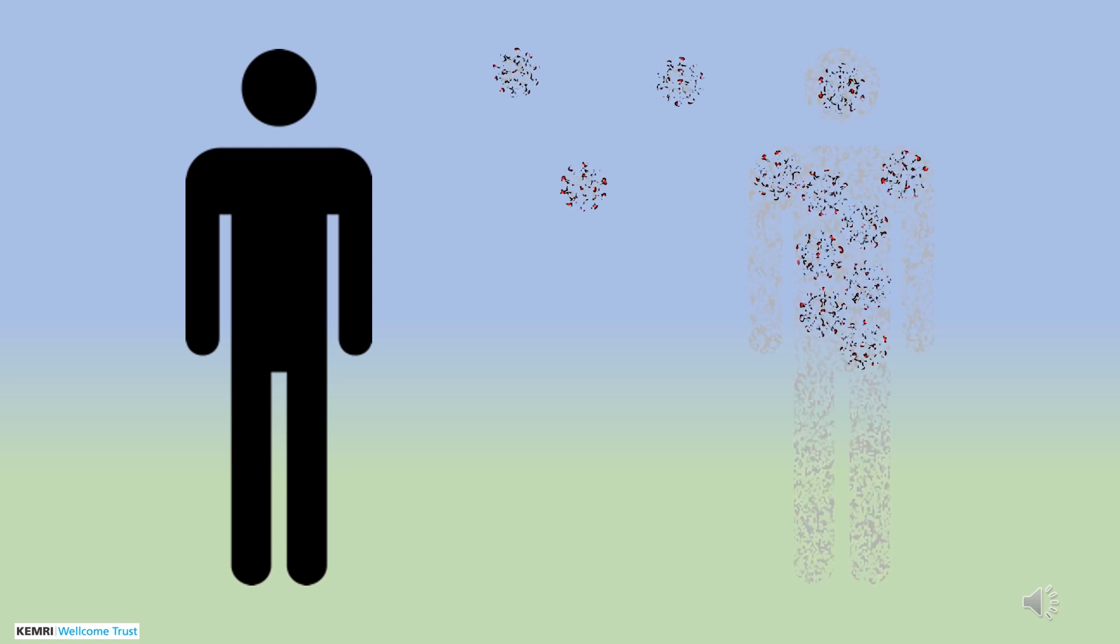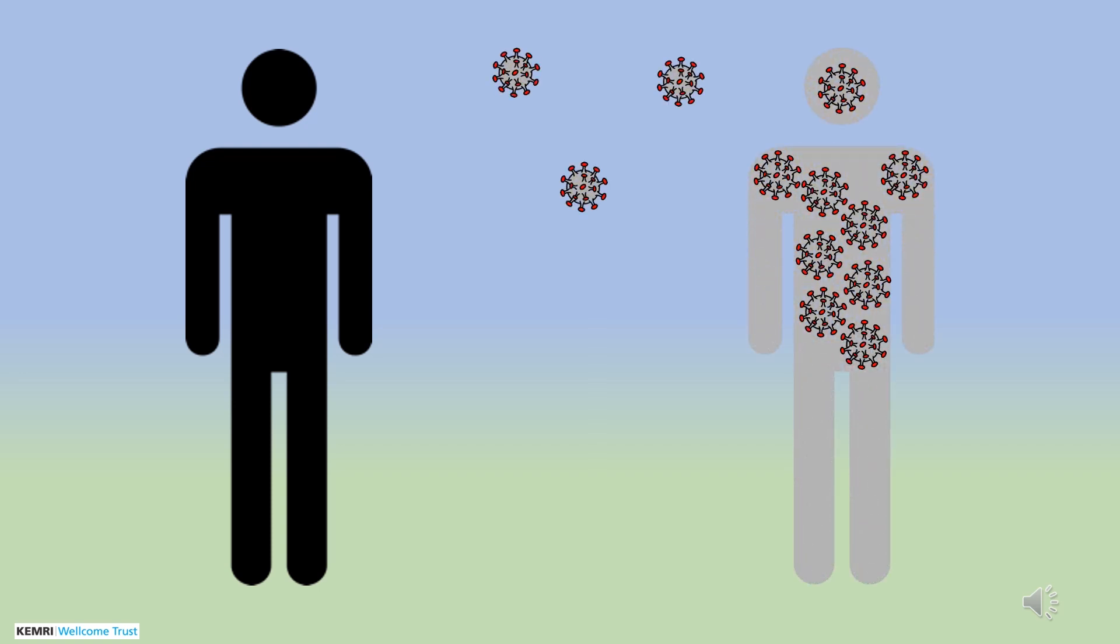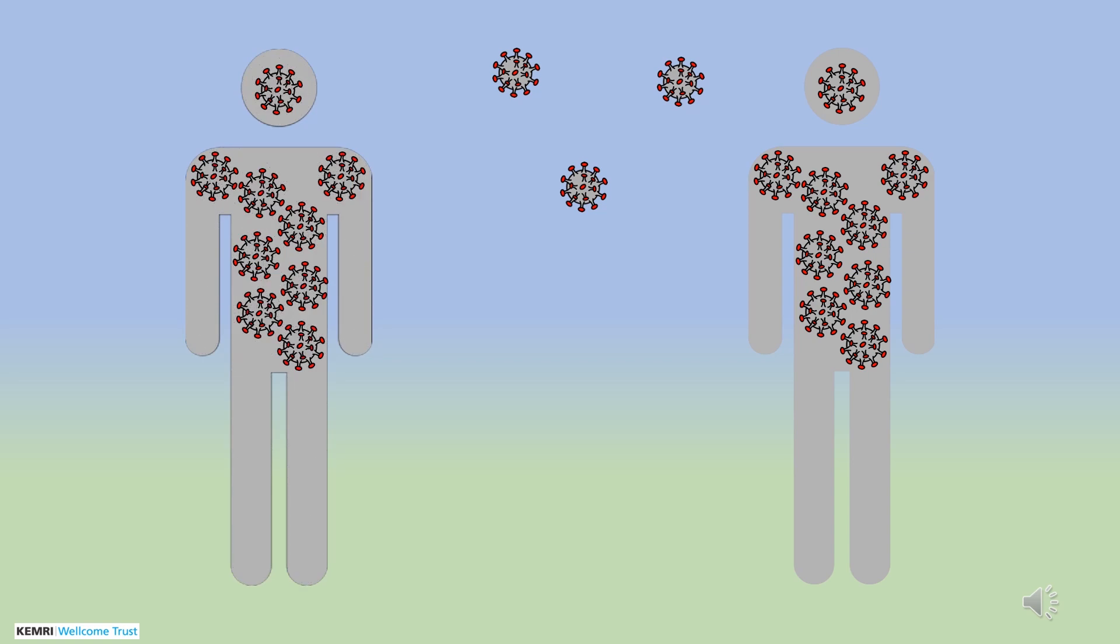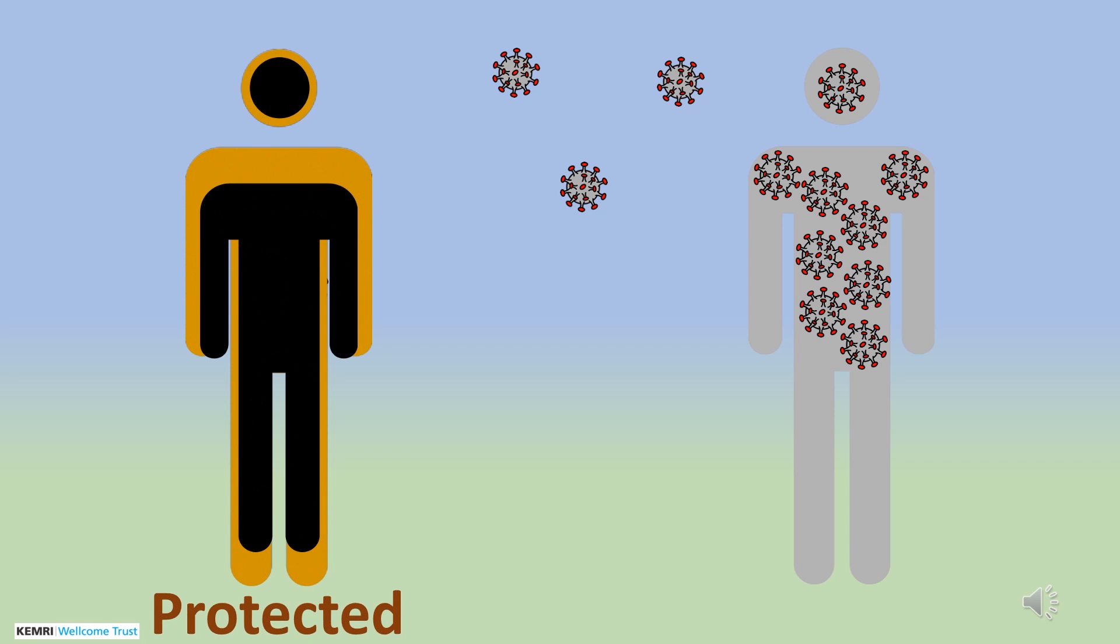People who have never had COVID-19 can easily become infected themselves if they come into close contact with a person who has the disease. This is because they have no natural immunity or defence to protect them against infection. Being infected may enable the body to build natural immunity which may prevent a second infection.